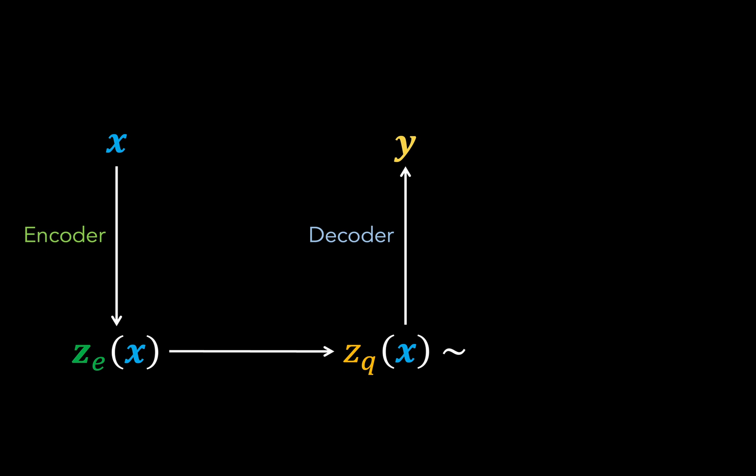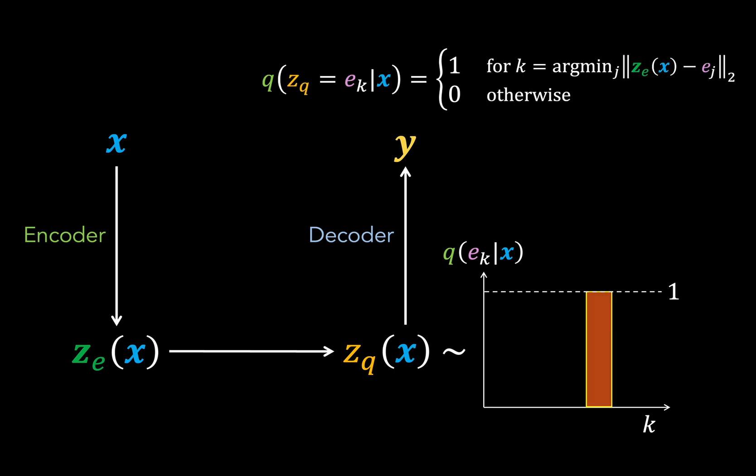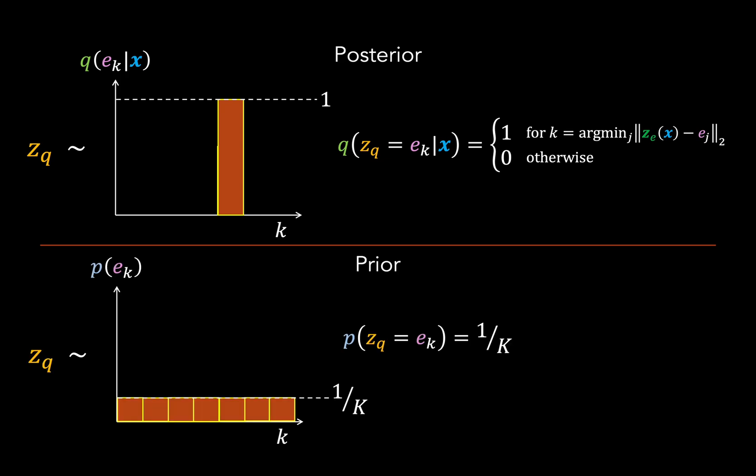Now the VQVAE picture is a little different. Instead of using a Gaussian distribution as our prior and posterior, we instead have a categorical distribution. And this is simply the probability of choosing any particular codeword index k. Now, of course, the nearest neighbor lookup procedure is deterministic. So our posterior has a probability of one for the nearest neighbor index and zero elsewhere. But what about our prior? Well, during training, we actually do not wish to bias our model in the codeword indices that it chooses. So our prior is just a uniform categorical distribution, with each index having probability one over big K, which is our codebook size.